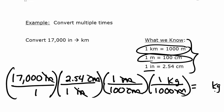Then do all the math: multiply all the tops, multiply all the bottoms, and divide the top by the bottom. Ones don't change the numbers, so it will be 17,000 times 2.54 divided by 100 divided by 1,000. The answer is 0.43 kilometers.